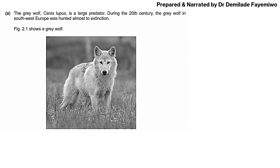Question 2: The gray wolf, Canis lupus, is a large predator. During the 20th century, the gray wolf in Southwest Europe was hunted almost to extinction. They include a picture of the wolf — most of the time these pictures are there to make you feel closer to the subject, as chapters 17 and 18 can feel quite distant. Don't spend time trying to interpret the picture; just skip to the question.